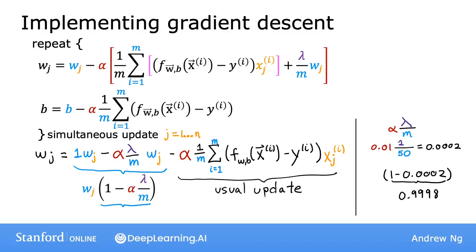And so the effect of this term is that on every single iteration of gradient descent, you're taking w_j and multiplying it by 0.9998, that is by some number slightly less than 1 before carrying out the usual update. So what regularization is doing on every single iteration is you're multiplying w by a number slightly less than 1, and that has the effect of shrinking the value of w_j just a little bit. So this gives us another view on why regularization has the effect of shrinking the parameters w_j a little bit on every iteration, and so that's how regularization works.